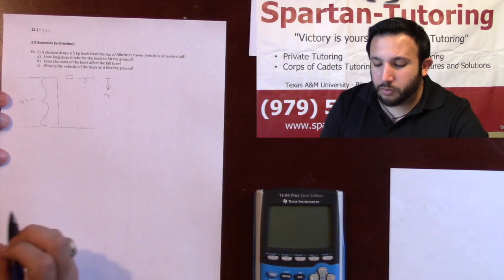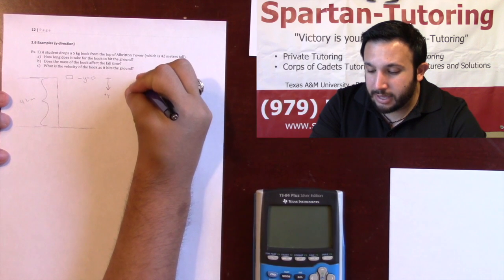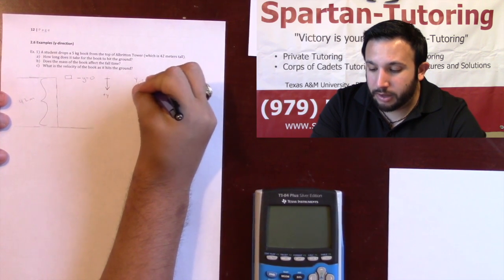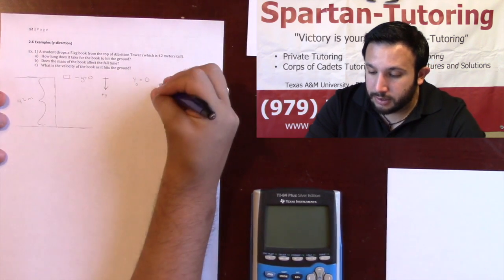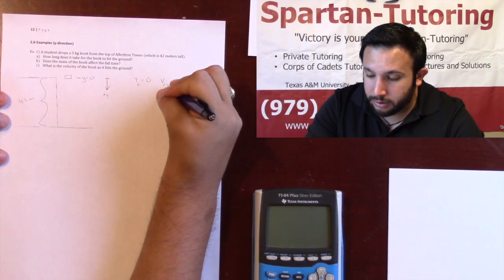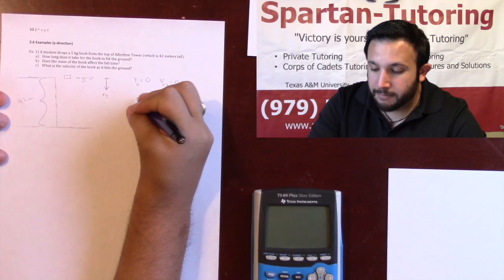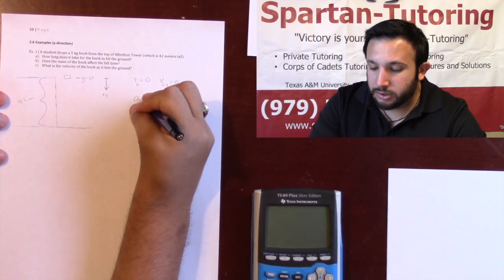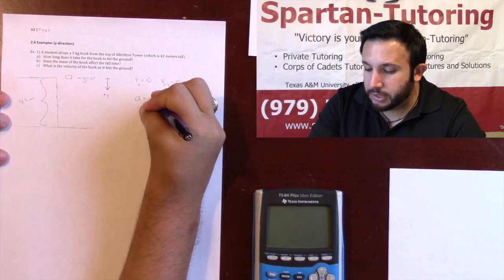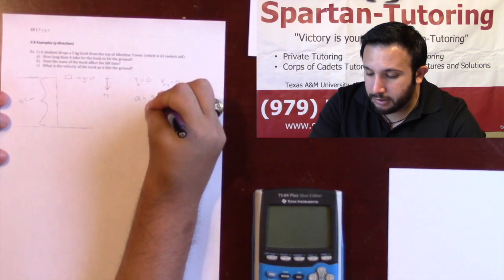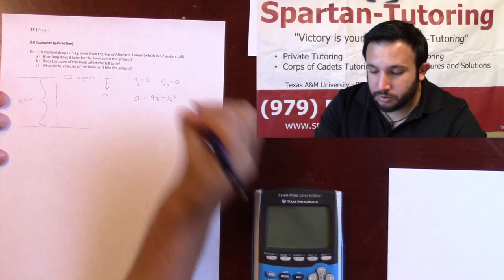That's why in this case for this problem I'm going to let y naught be zero, it says that it's dropped and so v naught in the y direction is zero, and your acceleration, the magnitude of acceleration on earth will always be 9.8 meters per second squared.